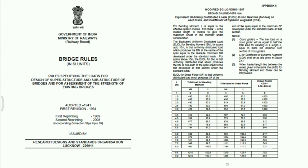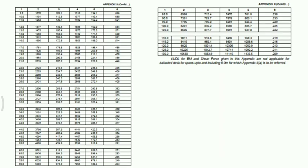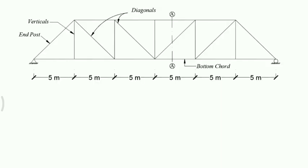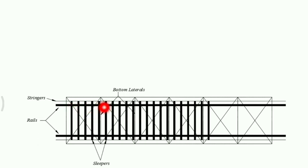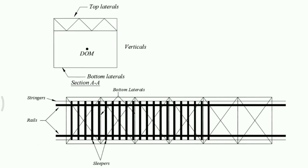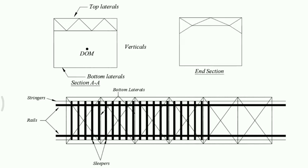The span in the table ranges from 1 meter to 130 meters. The truss given in the problem shows diagonals, vertical posts, and end posts, and the truss is simply supported. The top view of the truss shows top lateral beams and struts, rails, sleepers, and stringers. A section AA of the previous figure is also shown as the end section.